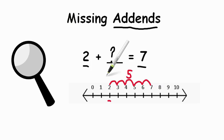So the missing number between two and seven, two plus five equals seven. So our missing addend, our missing number is five.